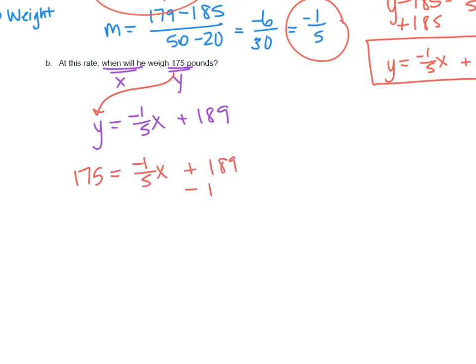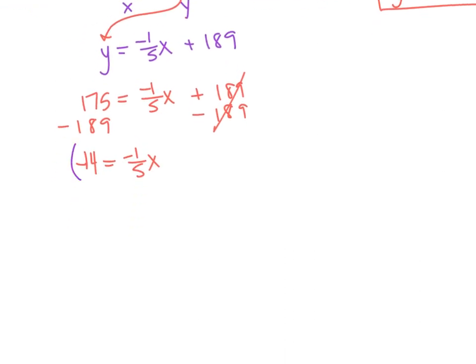Alright, we'll start by subtracting 189. We get negative 14 equals negative 1 fifth X. We can multiply everything by 5 to get rid of that fraction. We have negative 70 equals negative 1 X. Divide both sides by negative 1 and X equals positive 70. So when will he weigh 175 pounds? In 70 days.